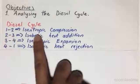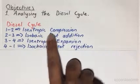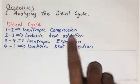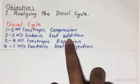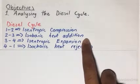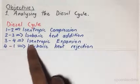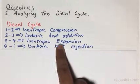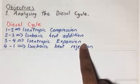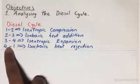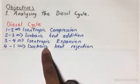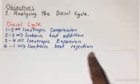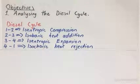Process 1-2 is an isentropic compression. Process 2-3 is an isobaric heat addition. Process 3-4 is an isentropic expansion. And process 4-1 is an isochoric — so constant volume — heat rejection.